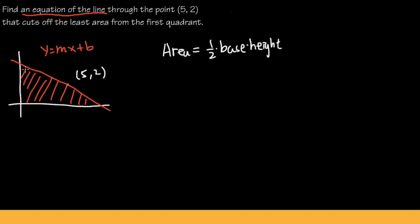Coming back to our picture: this segment will be the height and this other segment will be the base. For the height, look at where the line crosses the y-axis — that is our y-intercept. And since we're using the slope-intercept form y = mx + b, b is exactly the y-intercept. So the height of this triangle is b.